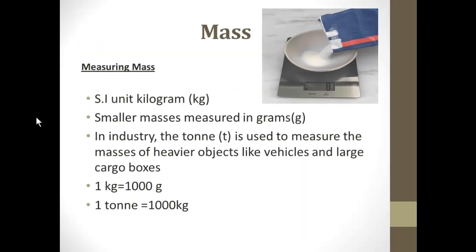How do we measure mass? The SI unit is kilogram. Smaller masses are measured in grams, while heavier objects in industries like vehicles and large cargo boxes will be measured in the unit tonne. Remember, 1 kilogram equals 1000 grams and 1 tonne equals 1000 kilograms.